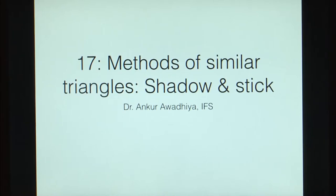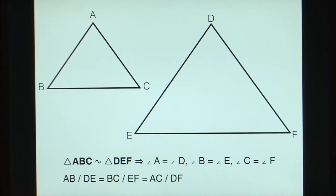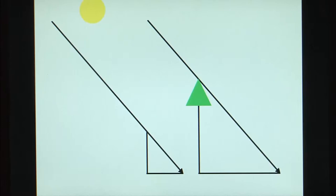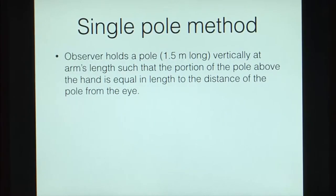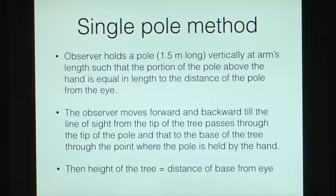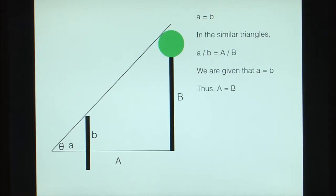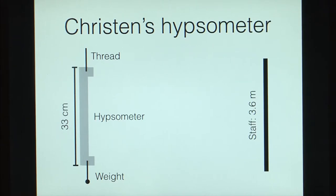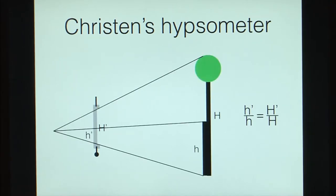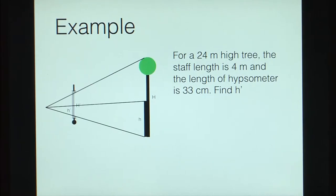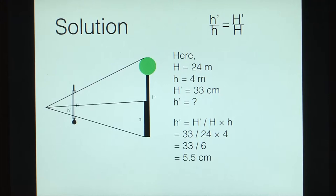For indirect measurement, you can use principles of similar triangles or trigonometry. In the single-pole method, the observer holds a pole creating two similar triangles, so the height of the tree is found as a constant ratio of the sides. We also looked at Christian's Hypsometer, which can be made from cardboard. It is used with a pole and gives readings for H and H prime, from which the height of the tree is calculated. Advantages: it is light and easy to transport, simple and easy to make, quick to use, and requires no distance measurement from the tree. However, it requires skill and must be kept steady and vertical.